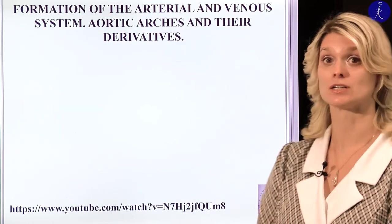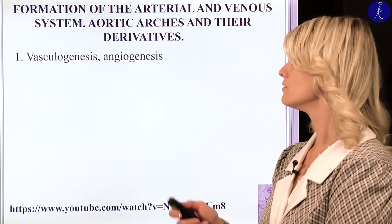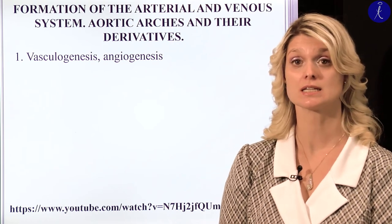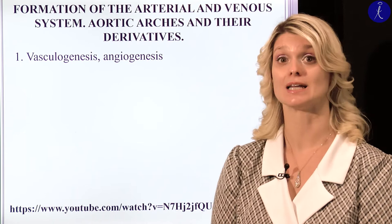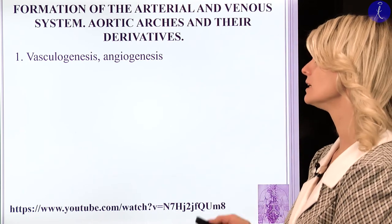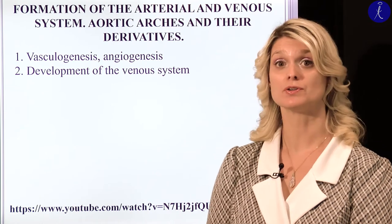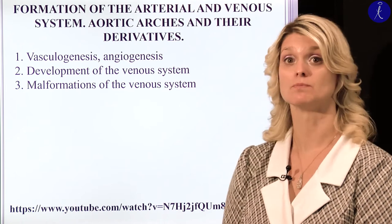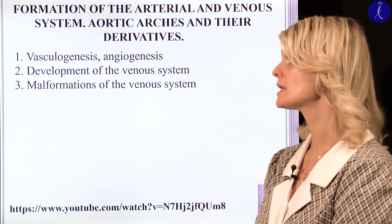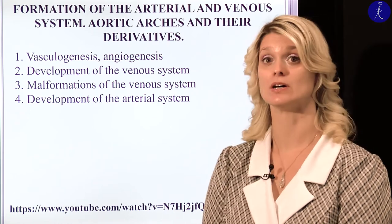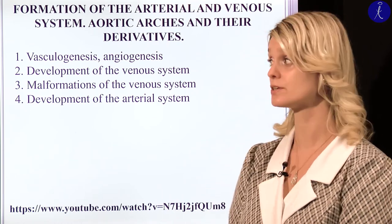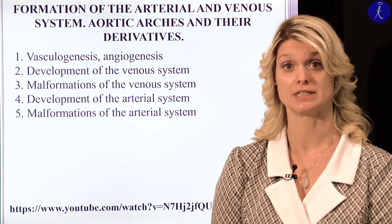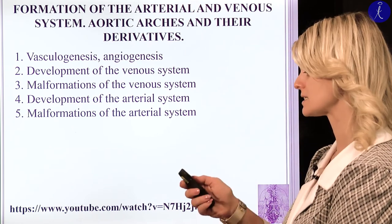Let's see the schedule of this lecture. First, I will tell you some words about the vasculogenesis and angiogenesis — we also heard it in the lecture on heart development. After, we will talk about the development of the venous system and see its malformations. Then we will continue with the development of the arteries, the pharyngeal arteries, and finally we will see the malformations of the arteries.